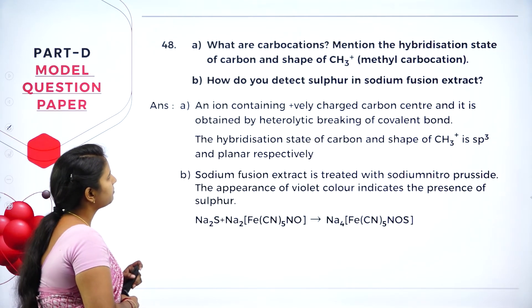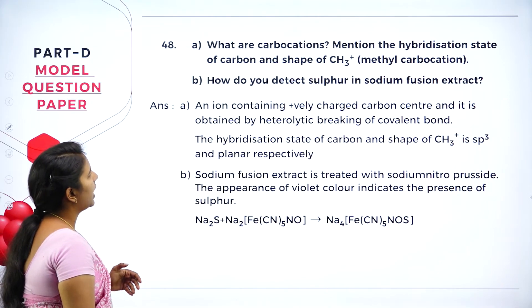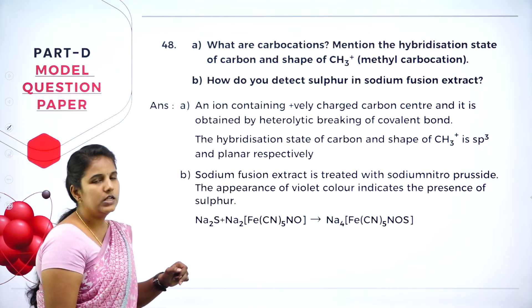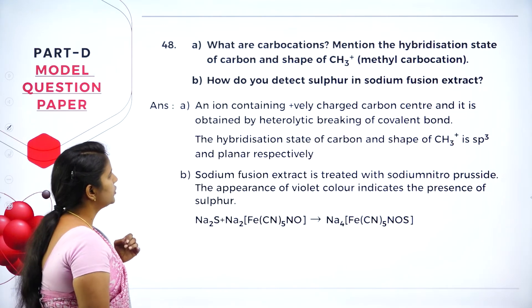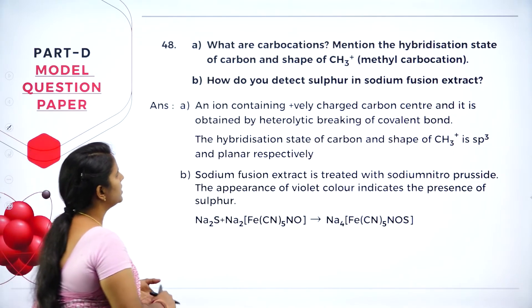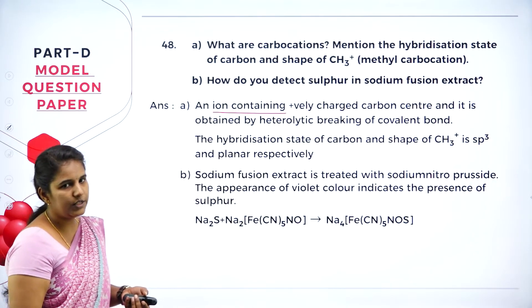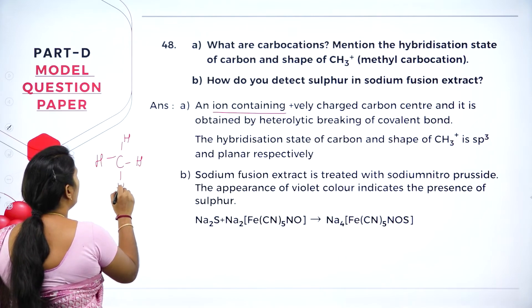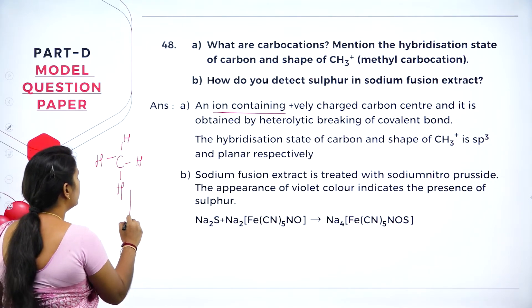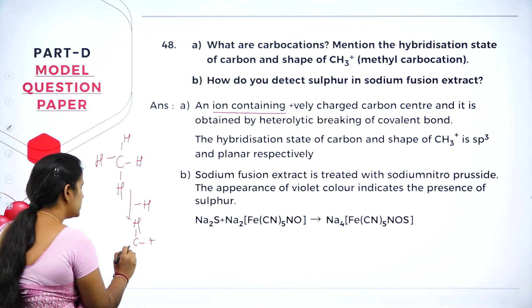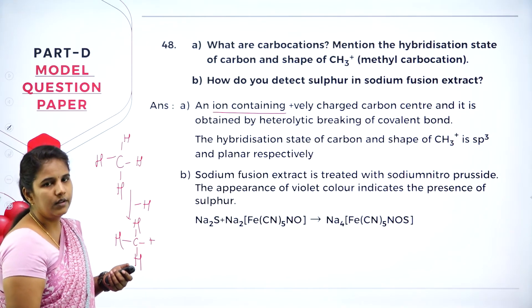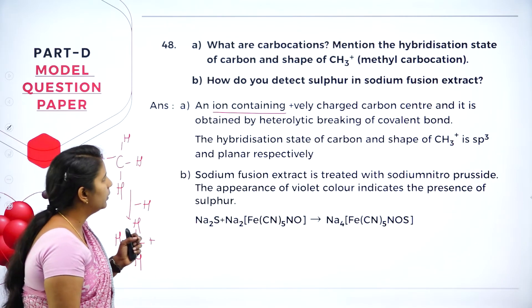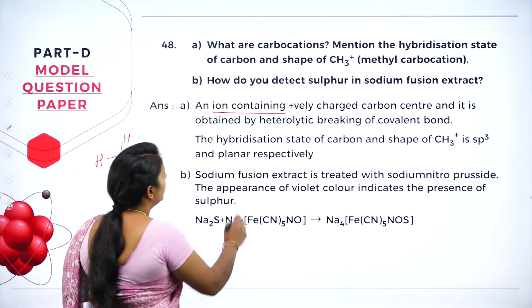Next question: What are carbocations? Mention the hybridization state of carbon and the shape of CH₃⁺ (methyl carbocation). Carbocations are ions containing a positively charged carbon center, obtained by heterolytic breakage of a covalent bond. For example, in methane, if one hydrogen is removed, carbon acquires a positive charge at the center — this is a carbocation. The hybridization of carbon in CH₃⁺ is sp² and it has a planar (trigonal planar) shape.